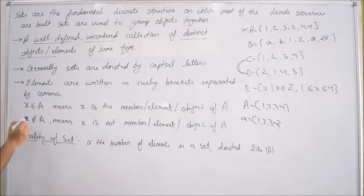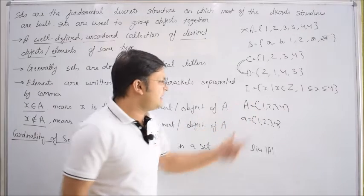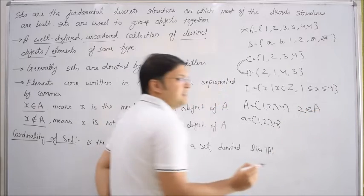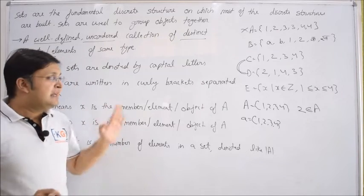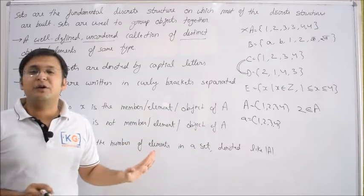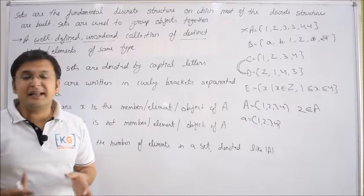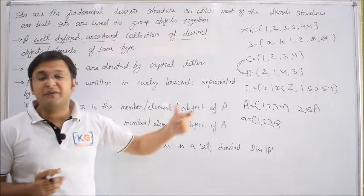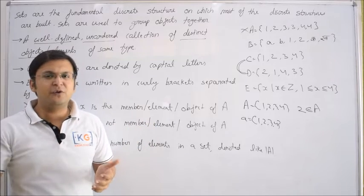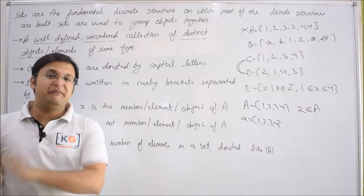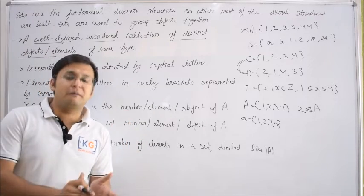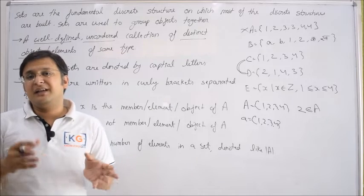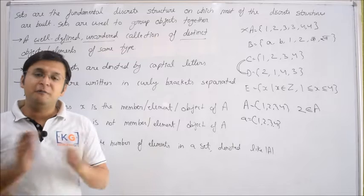Next, there are two basic notations: x belongs to A, and x does not belong to A. For example, 2 belongs to A. In standard set theory, either an element belongs to a set or it does not — there is no concept of partial membership. However, in extensions like fuzzy set theory, an element can be a member of a set with a participation value ranging from 0 to 1. In classical set theory, either you belong or you do not belong.